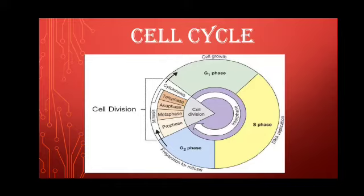In the synthesis phase, i.e. S phase, more DNA is synthesized and the chromosomes are duplicated. In the second growth phase, i.e. G2 phase, this is the shorter growth phase in which RNA and protein necessary for cell division continue to be synthesized.